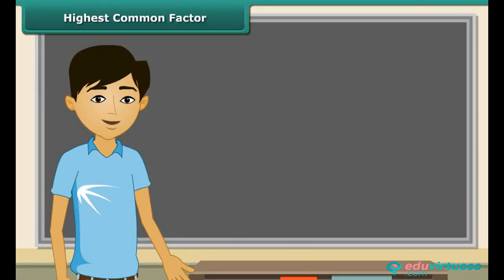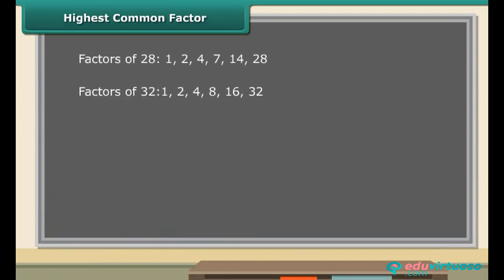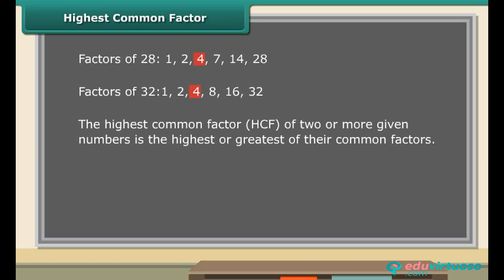Now that you know what common factors are, let us find the highest common factor of two numbers. Consider two numbers, 28 and 32. The factors of 28 are 1, 2, 4, 7, 14 and 28. The factors of 32 are 1, 2, 4, 8, 16 and 32. The common factors are 1, 2 and 4. It is clear that the highest common factor among these is 4. Therefore the highest common factor, HCF, of two or more given numbers is the highest or greatest of their common factors. It is also known as greatest common divisor or GCD.